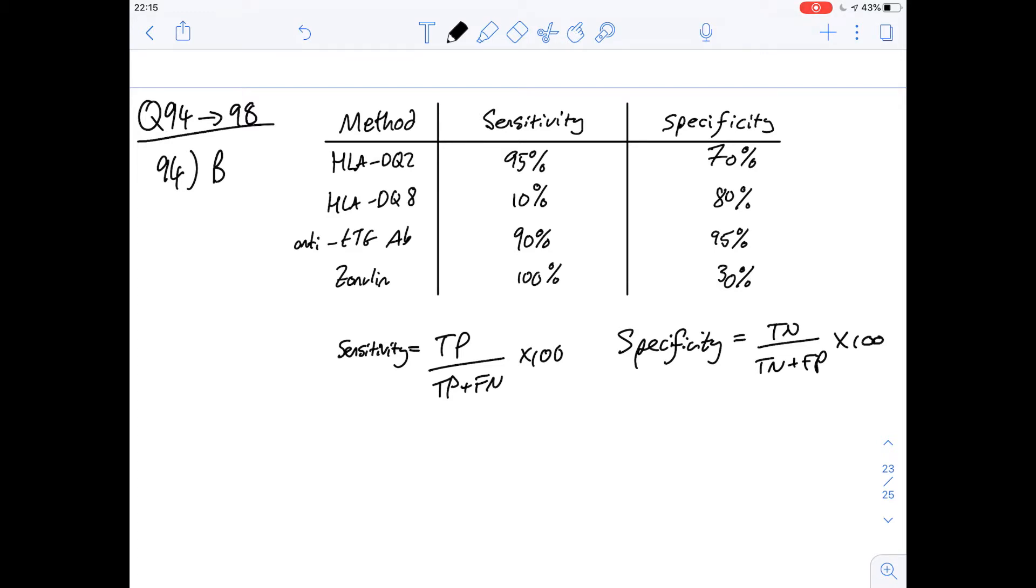Then we've got questions 95 to 98 and we've been given the sensitivity and specificity table and the different methods for testing for CD. We've also got definitions then of sensitivity and specificity.